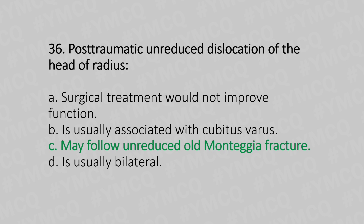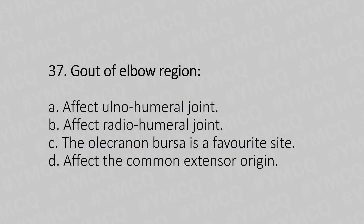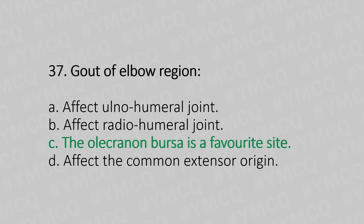Now let's move to question number 37. Gout of the elbow region. Option A, affects the ulno-humeral joint. Option B, affects the radio-humeral joint. Option C, the olecranon bursa is the favourite site. Option D, affects the common extensor origin. And the answer is Option C, the olecranon bursa is the favourite site.